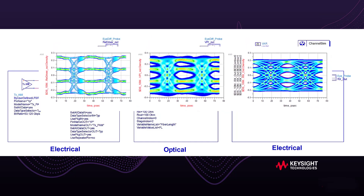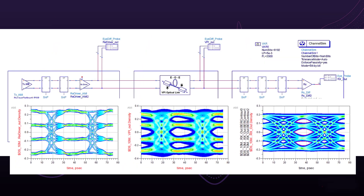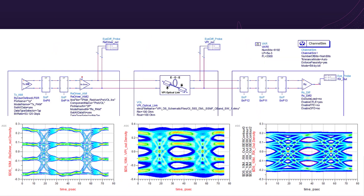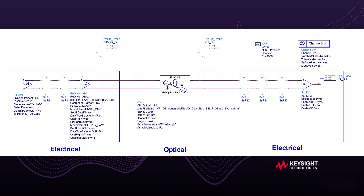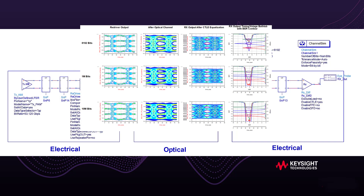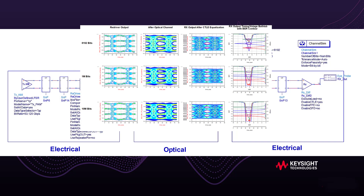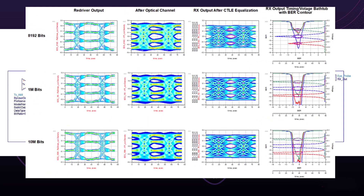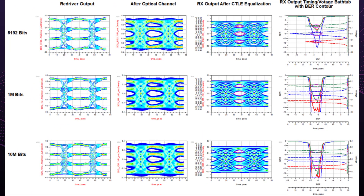The results shown here demonstrate the eye diagram at three different locations: one at the redriver output, one after the optical channel, and one after the optical channel receiver output. To the second question, yes, you can also show the bit error rate data with the same example. The results show the eye diagram at different number of bits simulated, as well as the timing and voltage bathtub with the bit error rate contour at the receiver output.